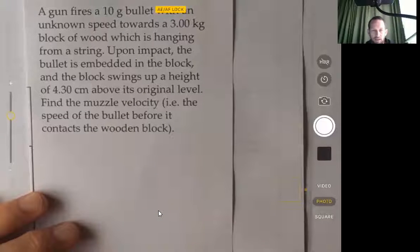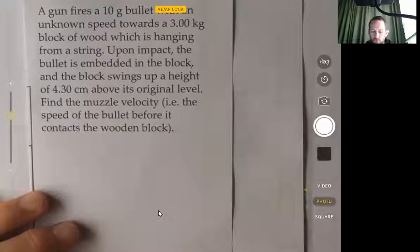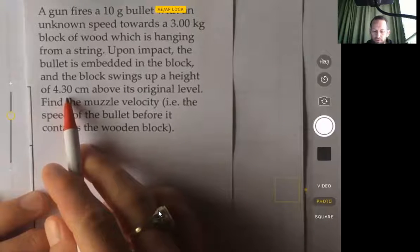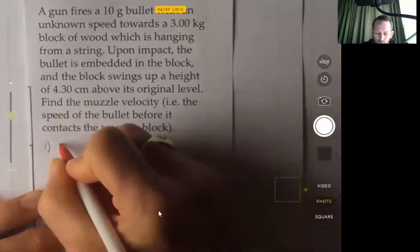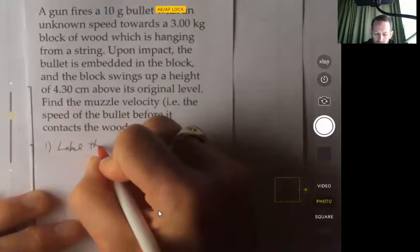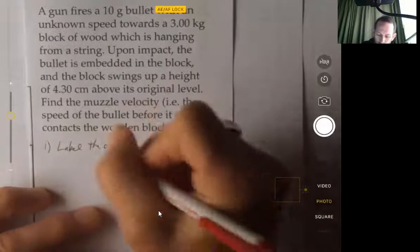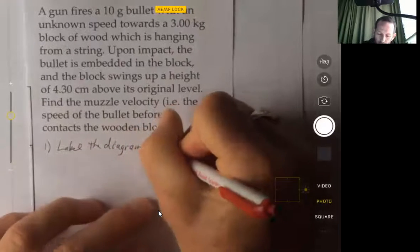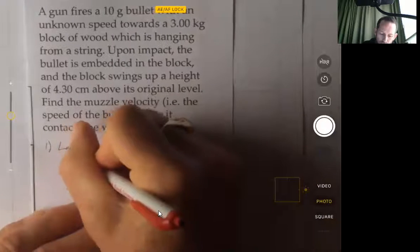We have a bullet hitting a block, which was stationary, and then the bullet and block swing upward to a height of 4.3 centimeters. So the steps involved: first of all, we're going to label the diagram of the block swinging, because there's already a diagram there provided.